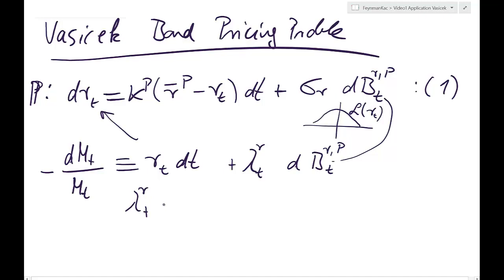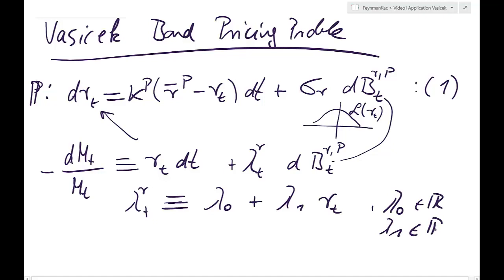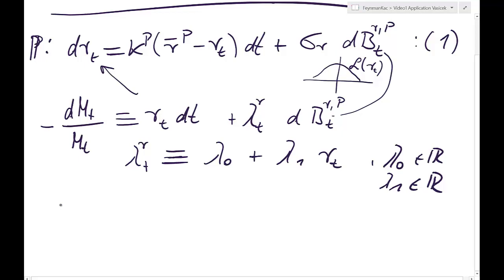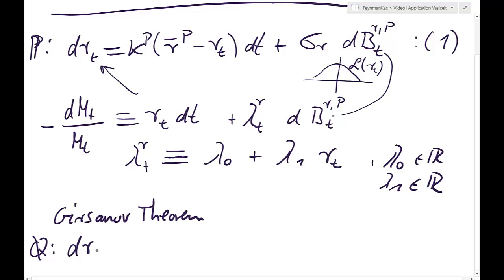What Vasicek assumes in the model is that lambda_t^r, the market price of interest rate risk, is just a linear or affine function of the interest rate itself. Lambda_0 is a constant and lambda_1 is also a constant. We therefore apply Girsanov's theorem, which allows us to rewrite equation 1 under the risk-neutral probability measure Q.